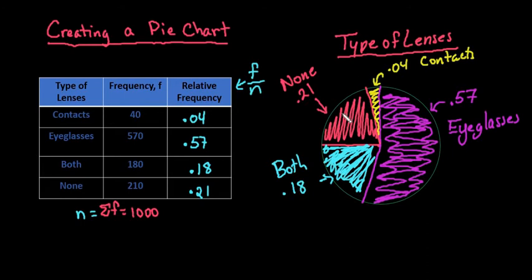So by labeling it, anybody looking at it can see that about 4% or the smallest portion wear just contacts, 57% of this particular sample wear eyeglasses, 21% don't wear either, and then 18% use both.